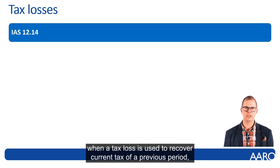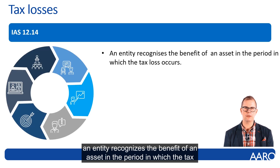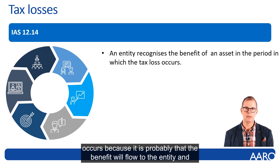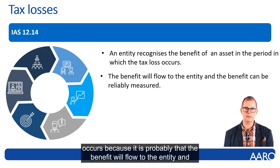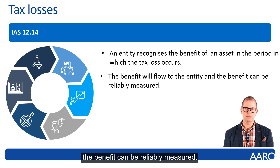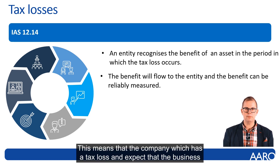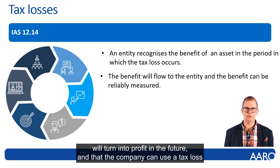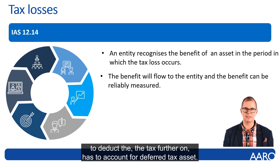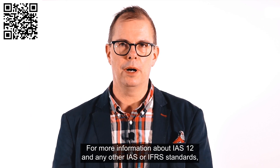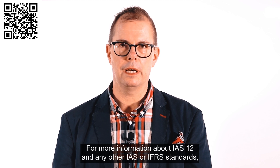When a tax loss is used to recover current tax of a previous period, an entity recognizes the benefit as an asset in the period in which the tax loss occurs, because it is probable that the benefit will flow to the entity and the benefit can be reliably measured. This means that a company which has a tax loss and expects that the business will turn into profit in the future — and that the company can use the tax loss to deduct tax further on — has to account for a deferred tax asset.